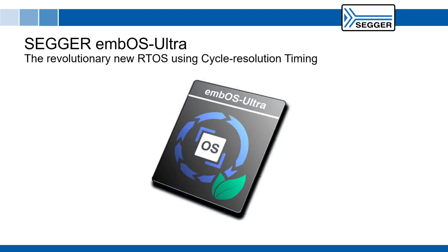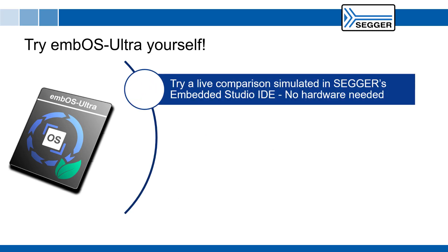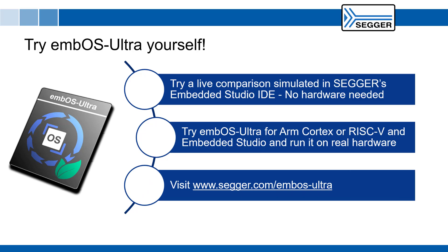This video showed how Seger's revolutionary new MBOS Ultra real-time operating system uses cycle-resolution timing to achieve higher resolution, enhance application performance, and reduce energy consumption. To evaluate MBOS Ultra, try a live comparison simulated in Seger's Embedded Studio IDE — no hardware needed. Or try MBOS Ultra for ARM Cortex or RISC-V in Embedded Studio and run it on real hardware. Visit www.seger.com/emboss-ultra to learn more.